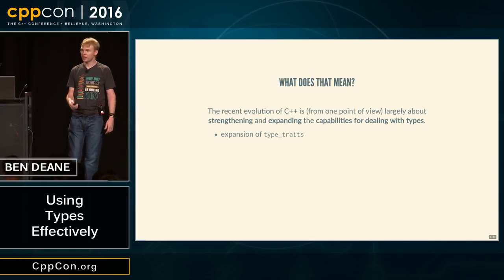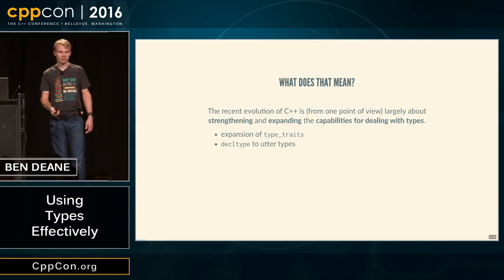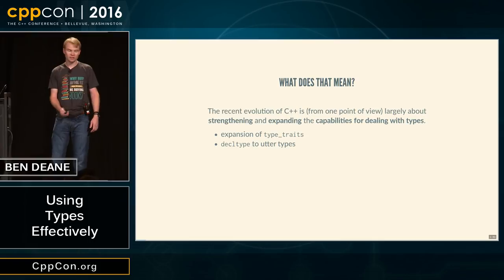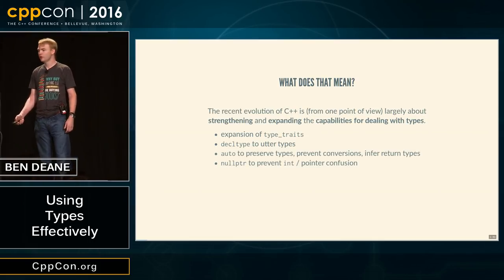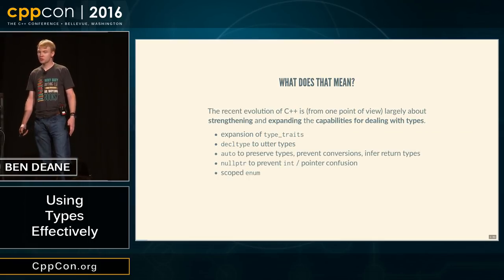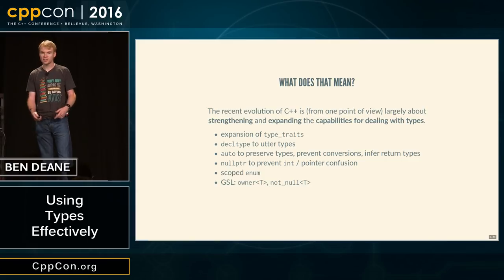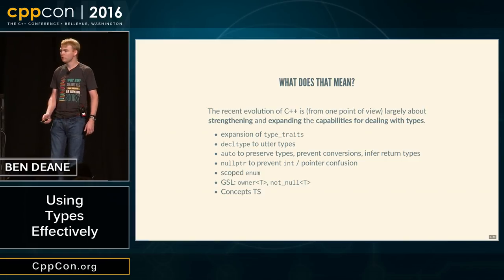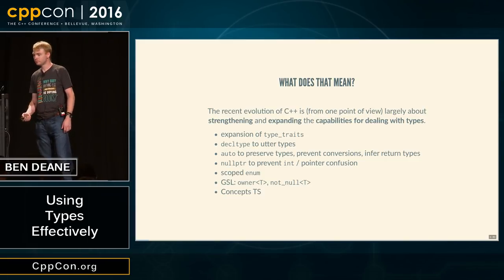That means things like massive expansion of type traits with C++11, things like decltype, auto, we've got nullptr now, scoped enums, we've got the GSL giving us more type safety, and the Concepts TS coming up.